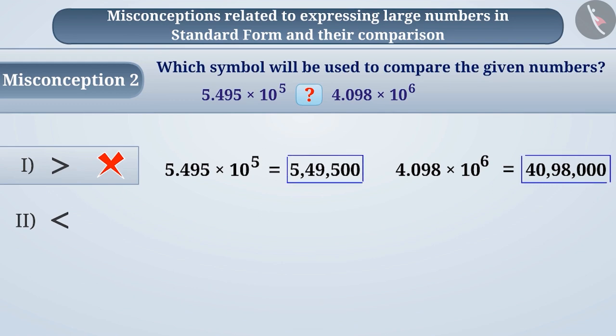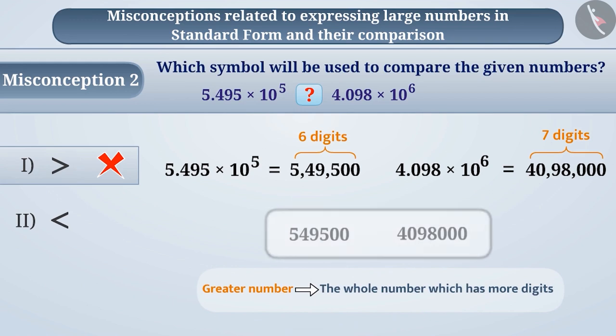Now, if we compare both numbers, we can see that the first number has 6 digits while the second number has 7 digits. And you must know that the whole number which has more digits is the greater number. Therefore, the second number is greater.